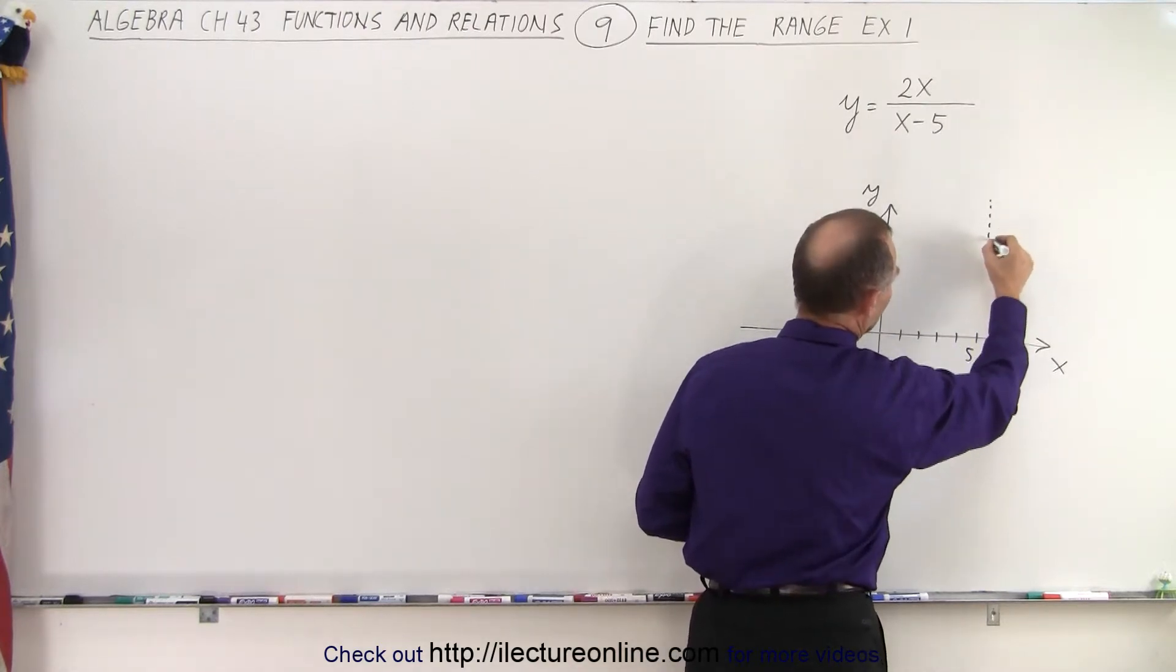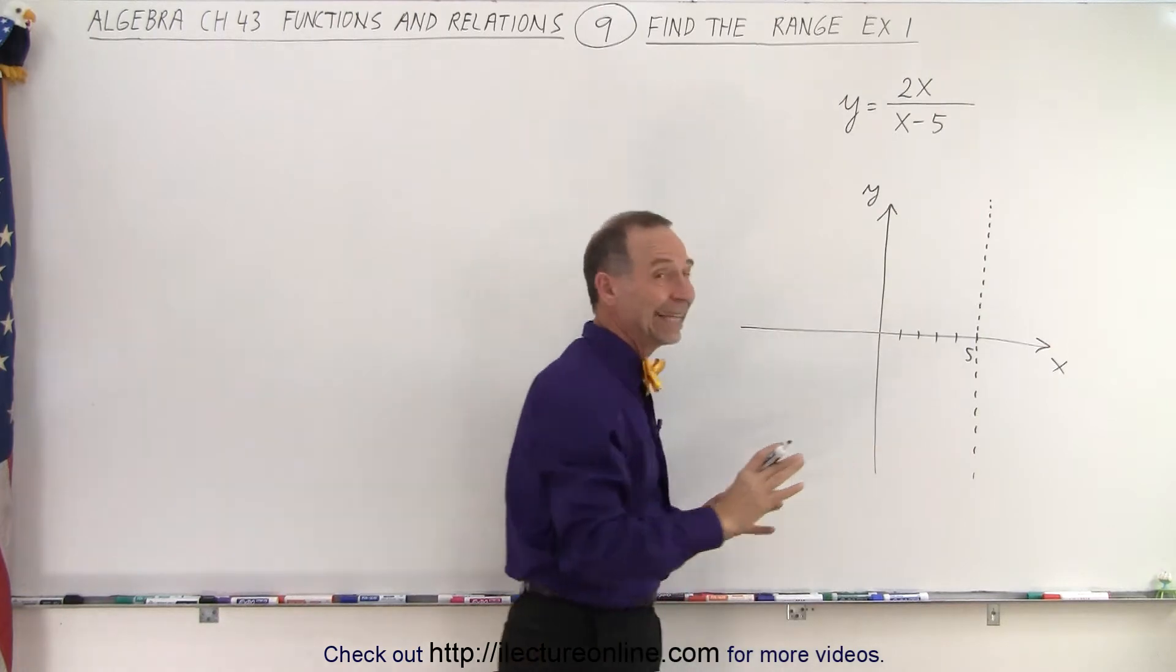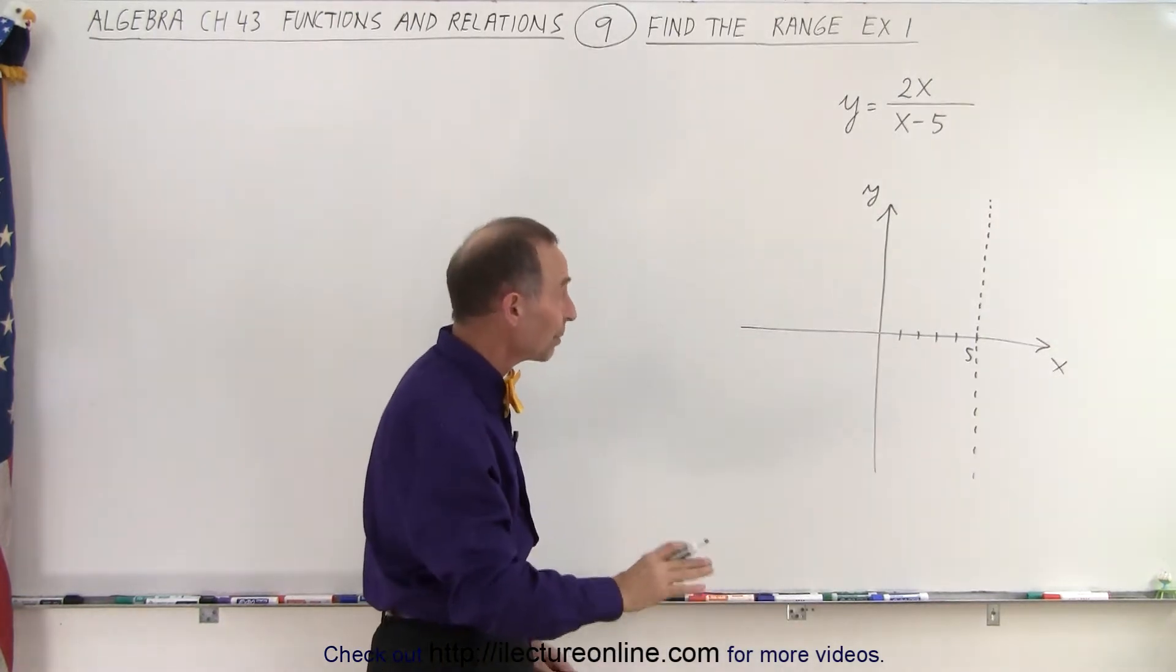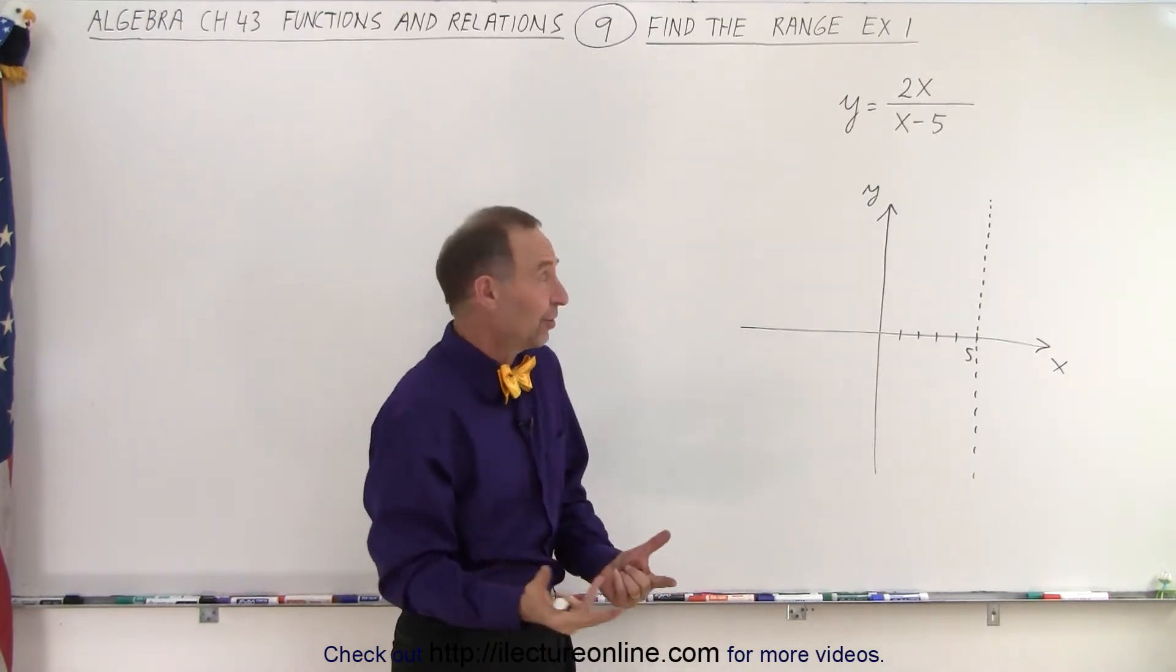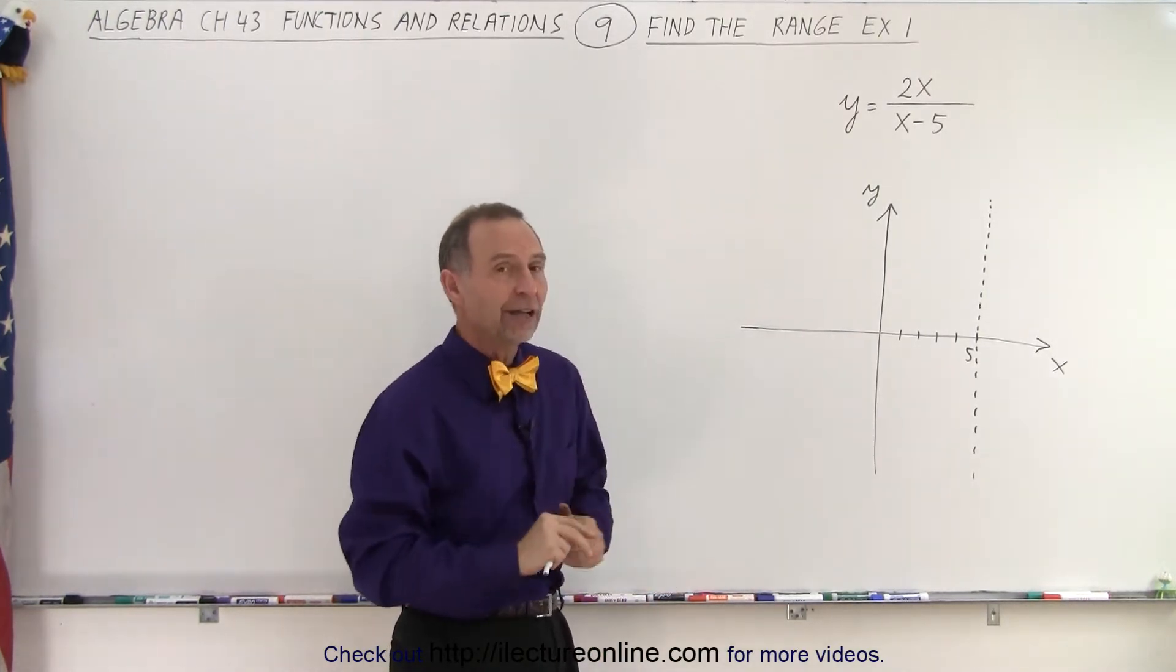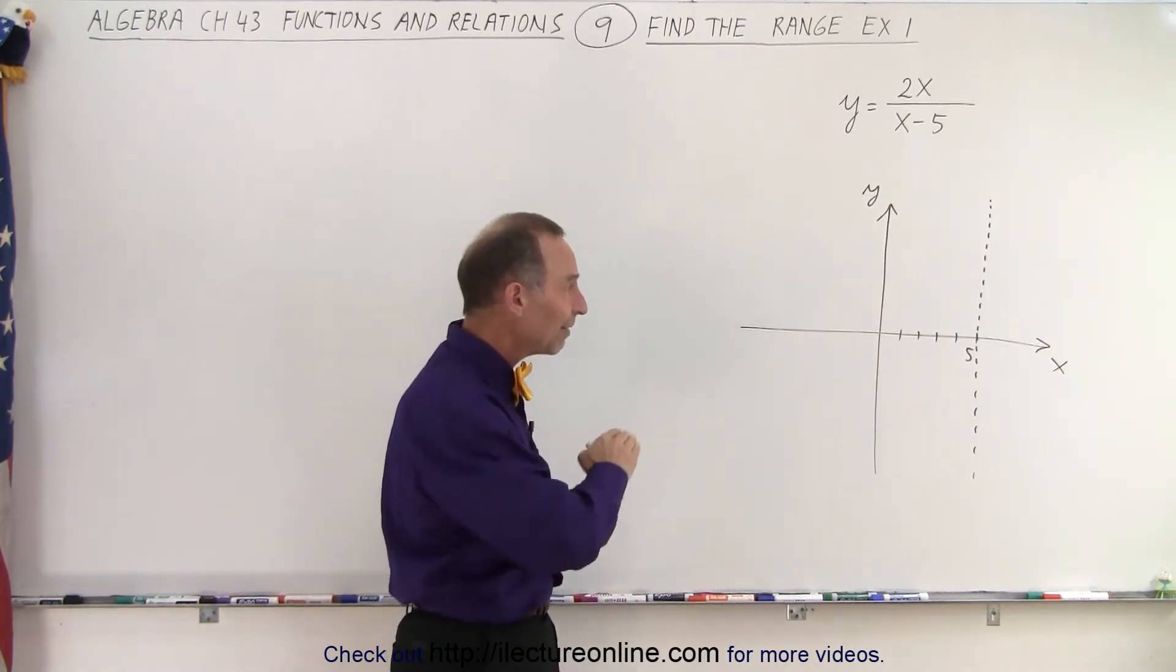Right there we're going to draw a dashed vertical line because whatever the function looks like, it cannot cross that line because there's no circumstance in which x is allowed to be 5. 5 minus 5 is 0, 0 denominator, undefined.